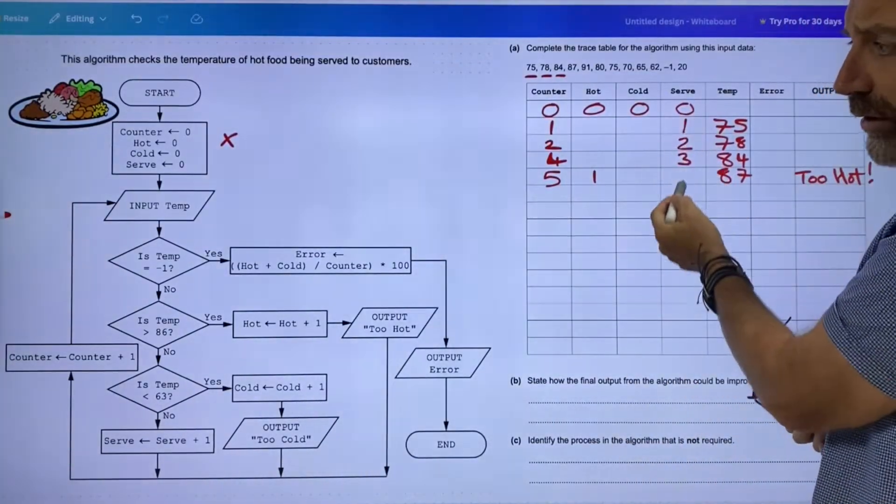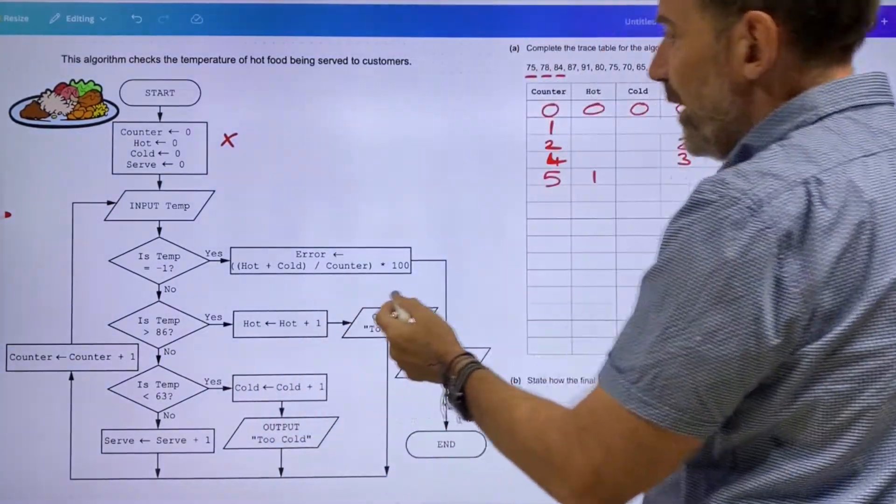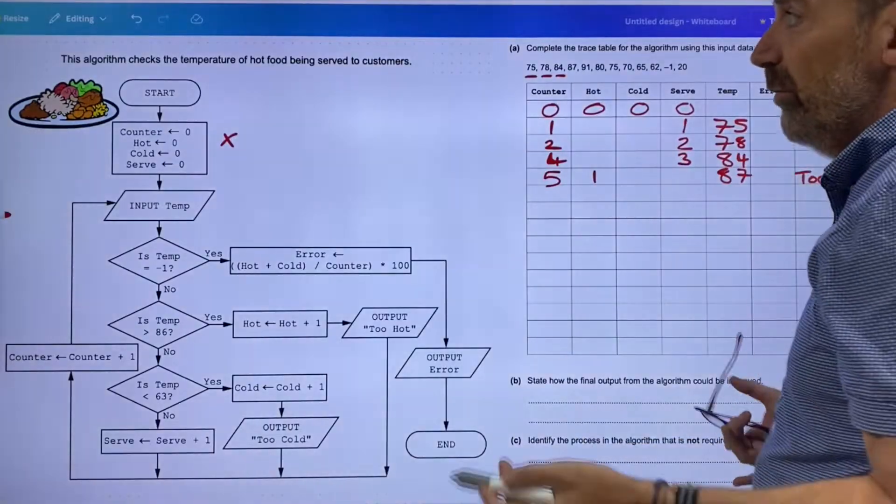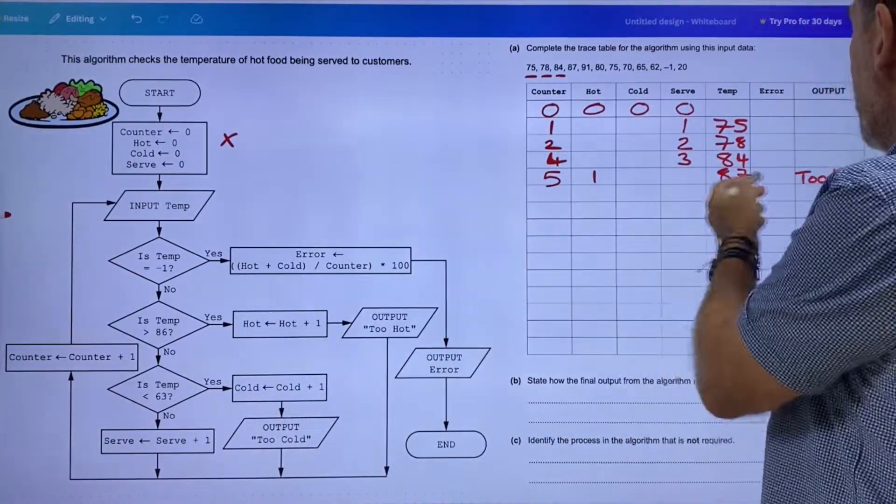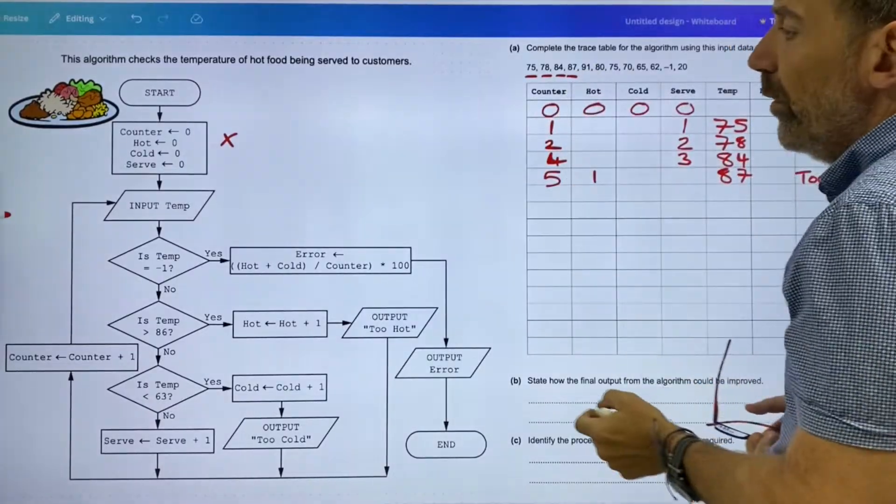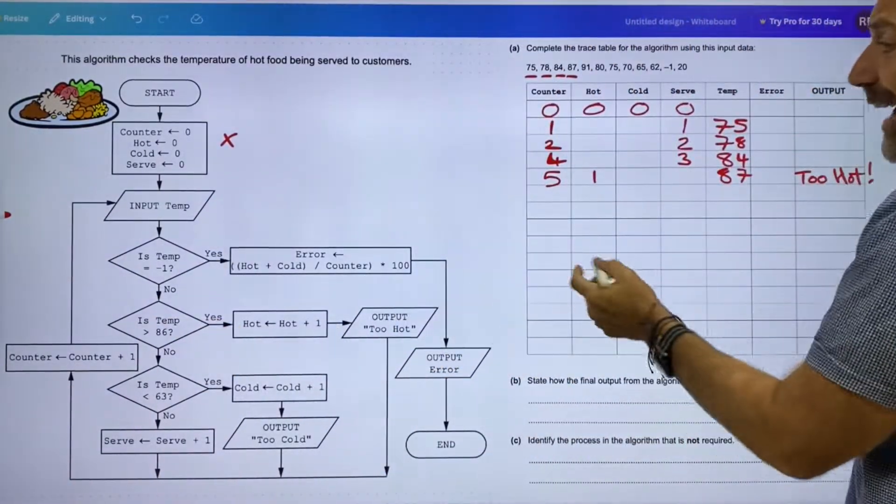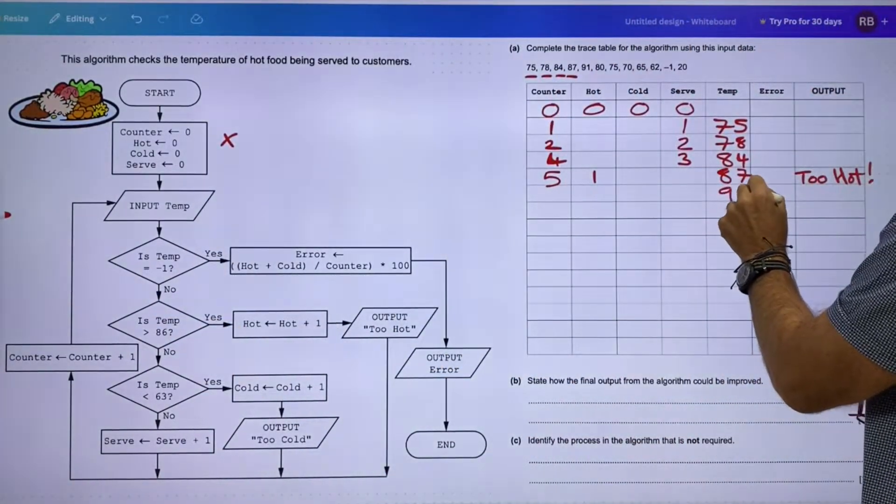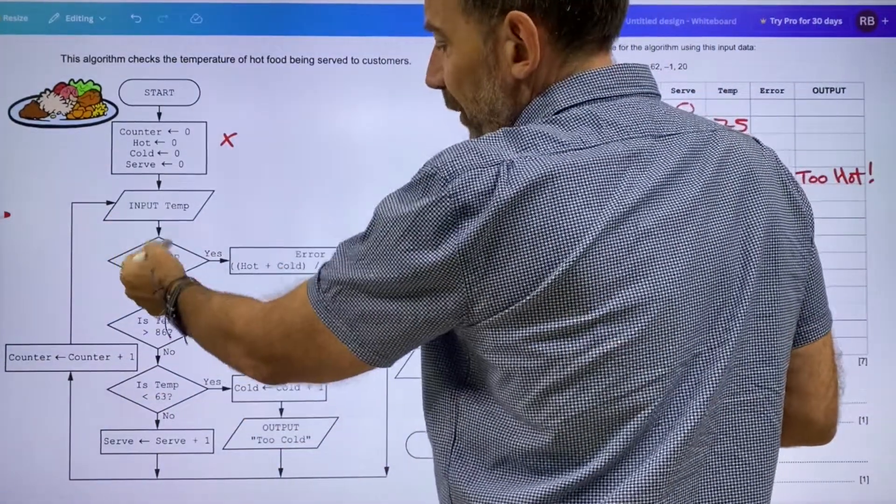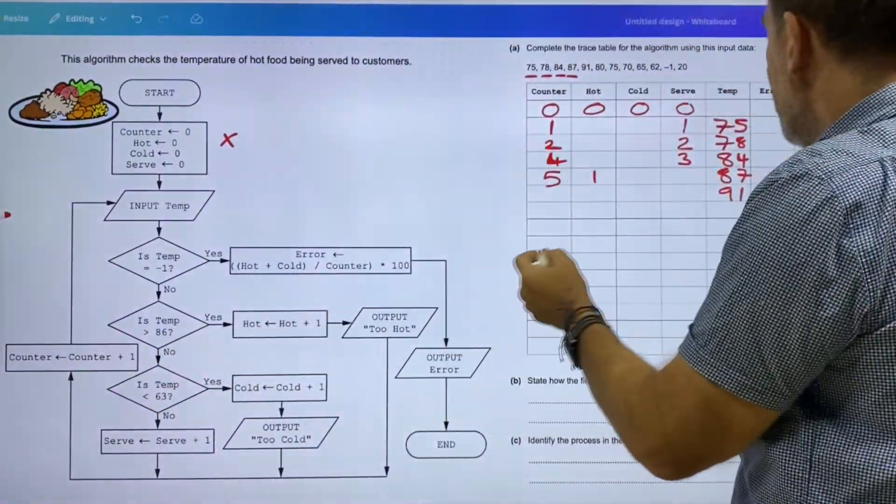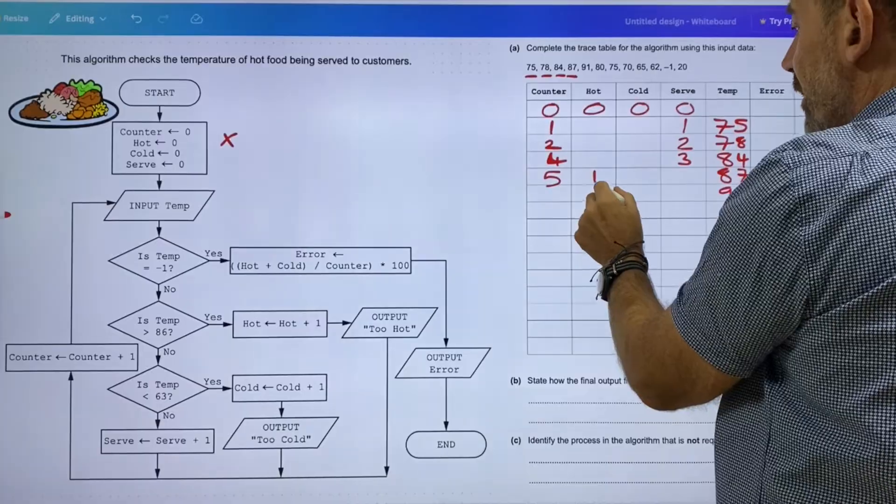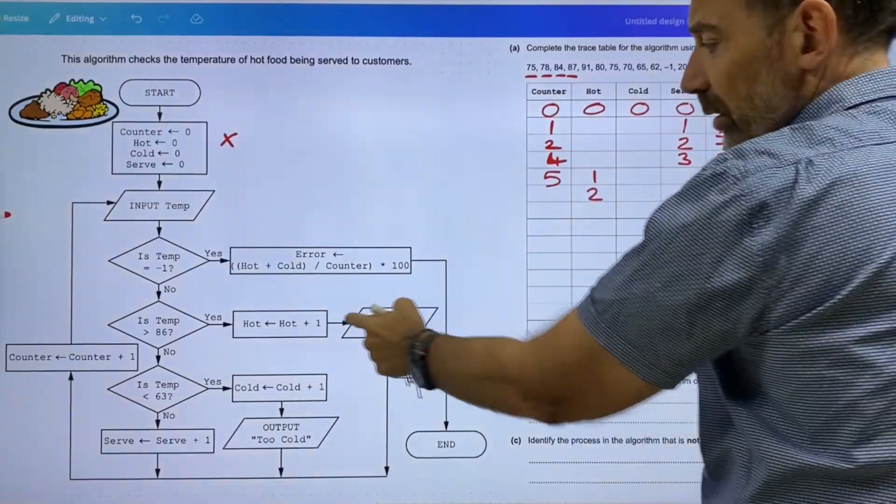87—what's that mean? Is the temperature greater than 86? This is 87. Hot equals, or it's been assigned the value hot plus one. So here we'll put a one in that. Output 'too hot'.